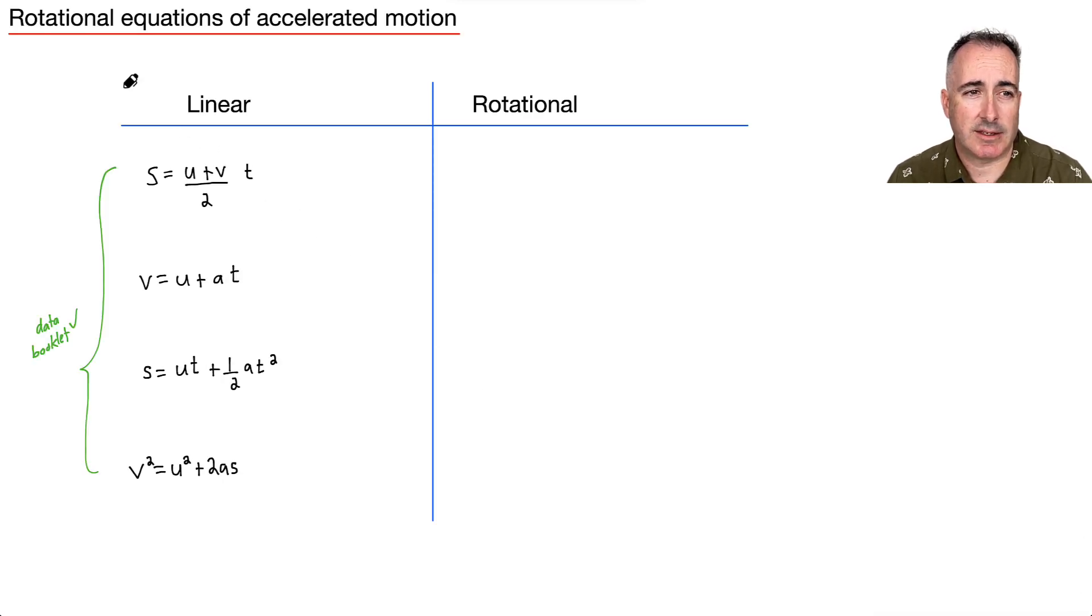So let's apply these equations now for rotation. So these are the linear versions, the ones you might be used to that are in your data booklet. Well, now I've got a new set that are in your data booklet. So how do they go?